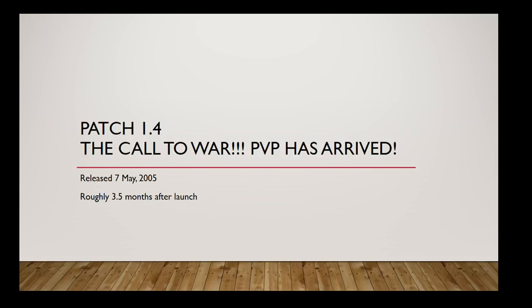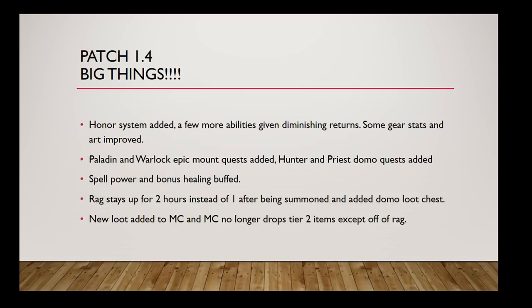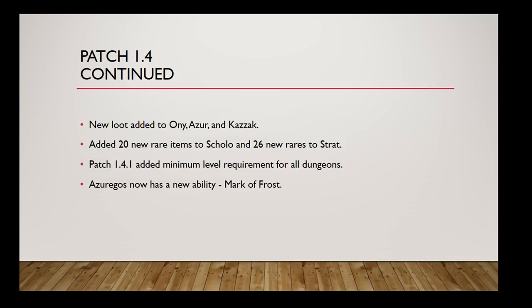Patch 1.4, The Call to War, was the major PvP patch where the honor system was added, stats were improved, and the Warlock, Paladin, and Epic Mount quests were added along with Molten Core class weapons like the Hunter Bow and the Priest Benediction and Anathema. This was also a big patch for the spell power and healing buff. For raiding, Ragnaros used to have a duration timer — if you waited longer than an hour he would despawn and you'd have to kill Domo again before putting more attempts in. This patch also made it so only Ragnaros dropped tier 2, whereas before everyone else was dropping it too.